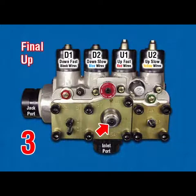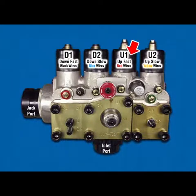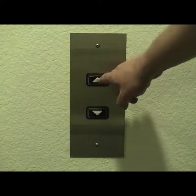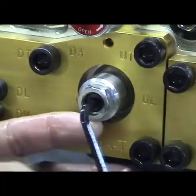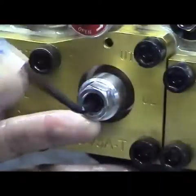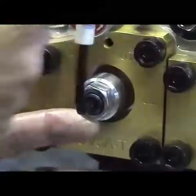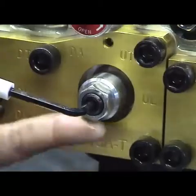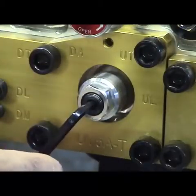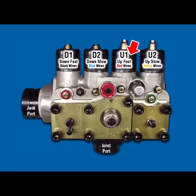UL Up Leveling. Car at lower floor with no load. Disconnect U1. Register an up call. Turn UL counterclockwise for faster or clockwise for slower to set up leveling speed at 10 to 13 feet per minute. Leave U1 disconnected.